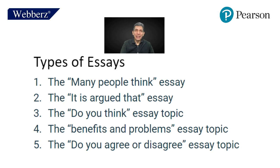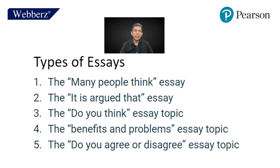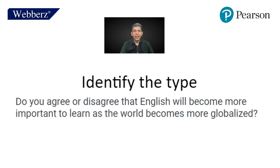There are five types of essays. The first is 'many people think.' The second is 'it is argued that.' The third is 'do you think.' The fourth is 'benefits and problems.' And the fifth is 'do you agree or disagree?' Let us try to identify these essay types from examples.